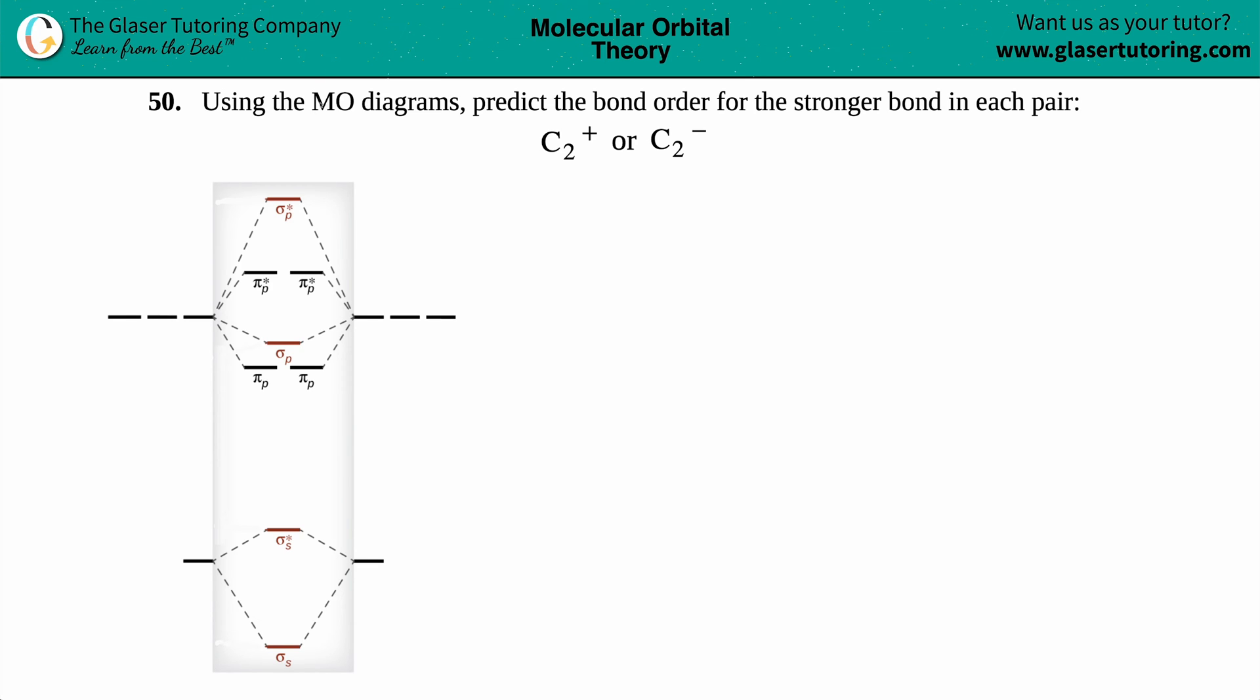Number 50. Using the molecular orbital diagrams, predict the bond order for the stronger bond in each pair. And then we have C2 plus or C2 minus.